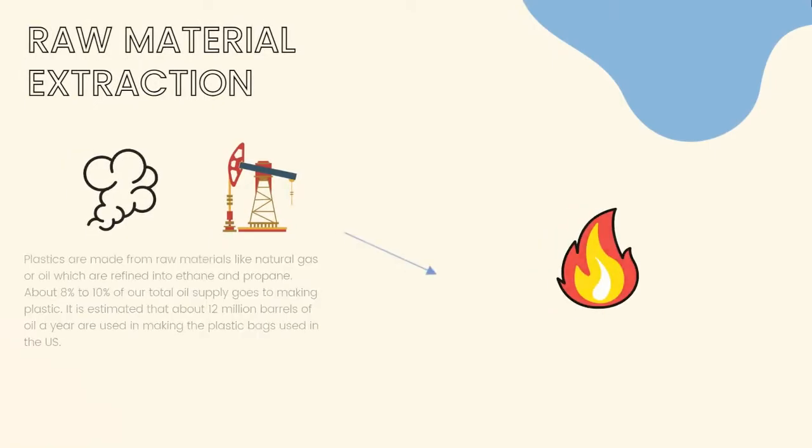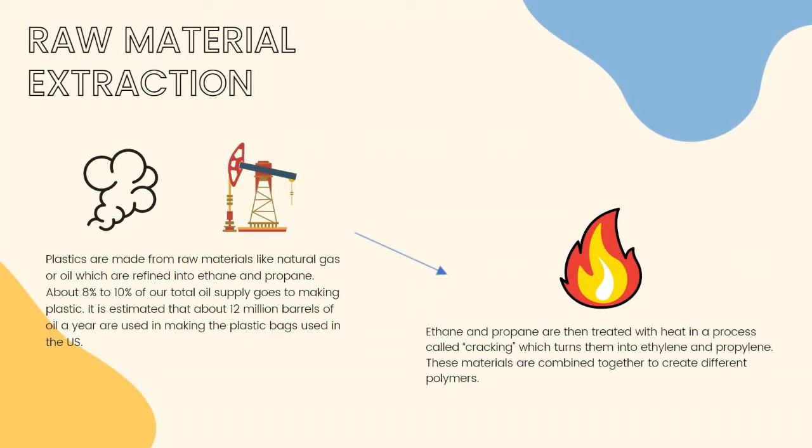The first process is raw material extraction. Plastics are made from raw materials like natural gas or oil which are refined into ethane and propane. About 8% to 10% of our total oil supply goes to making plastic. It is estimated that about 12 million barrels of oil a year are used in making the plastic bags used in the US. Ethane and propane are then treated with heat in a process called cracking, which turns them into ethylene and propylene. These materials are combined together to create different polymers.